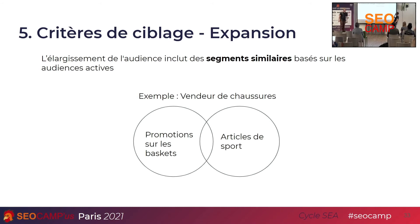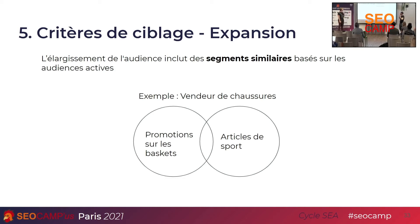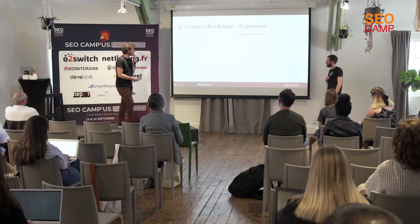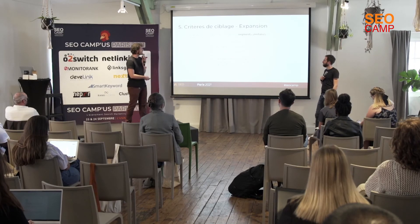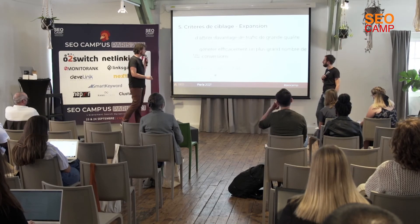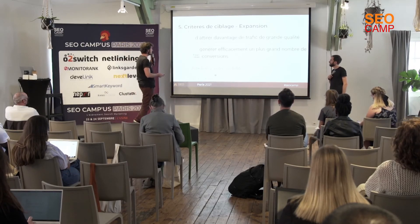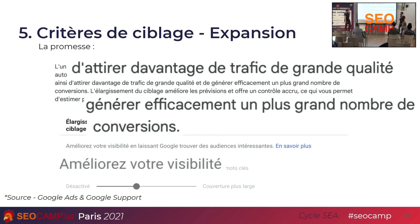La cinquième chose : le critère de ciblage expansion. Ça peut s'activer automatiquement ou se mettre par défaut quand vous créez une campagne. L'idée, c'est que vous choisissez des segments que vous ciblez avec vos campagnes display ou search, et Google va considérer qu'une partie de votre audience se trouve également dans un autre segment. Il va aller chercher des audiences similaires — ce qu'on appelle maintenant segments. La promesse de Google, c'est du trafic en grande quantité, un plus grand nombre de conversions, ainsi qu'une plus grande visibilité.